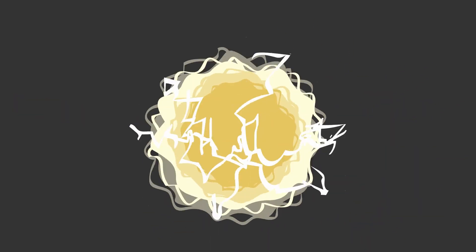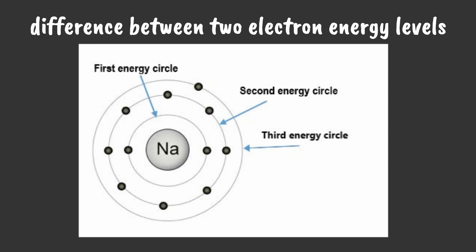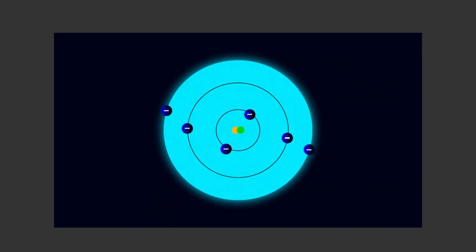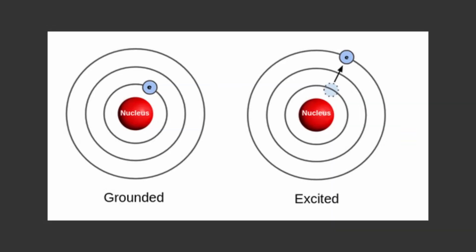When light hits an atom, there are a few things that can happen. If the photon's energy matches the difference between two electron energy levels in an atom, an electron can absorb the photon and jump to a higher energy level, leaving the atom in an excited state.